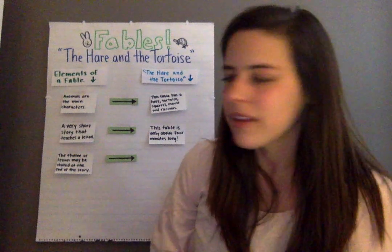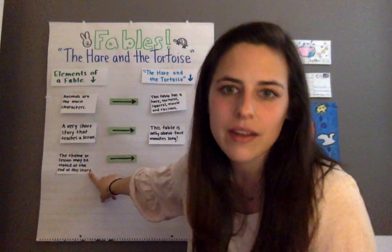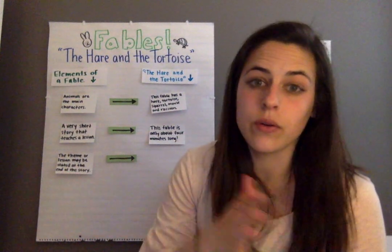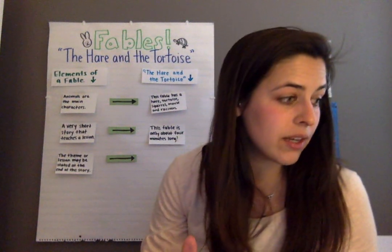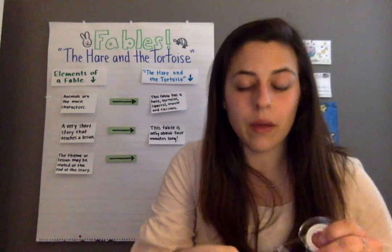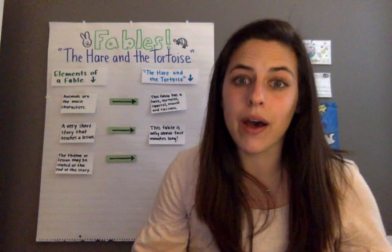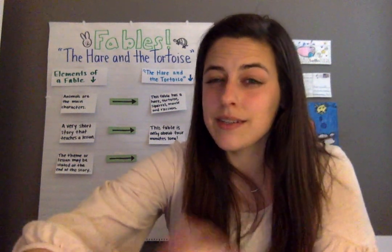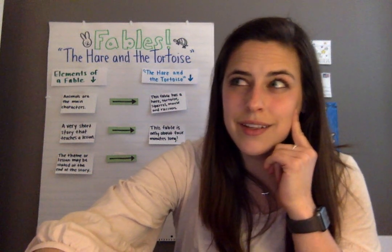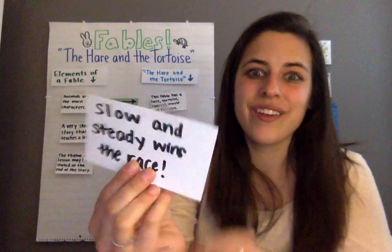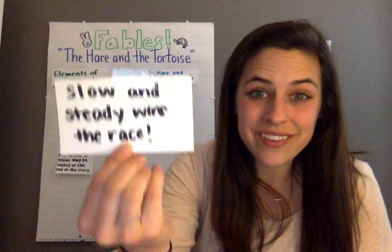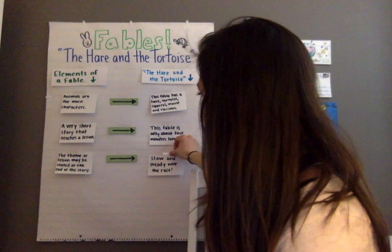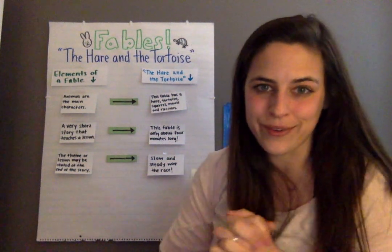The last element is that the theme or lesson may be stated at the end of the story. Usually fables will tell you what their message is — you don't usually have to guess. Sometimes they want you thinking about it, but for example, in the Hare and the Tortoise, they told us at the end: slow and steady wins the race. That is our third and final element of a fable that we saw in the Hare and the Tortoise.